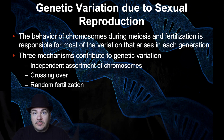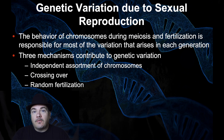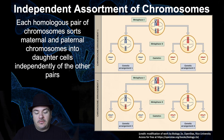There are three mechanisms that contribute to genetic variation through sexual reproduction: independent assortment of chromosomes, crossing over, and random fertilization. So let's go through them one by one, starting with independent assortment of chromosomes.